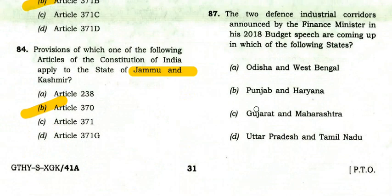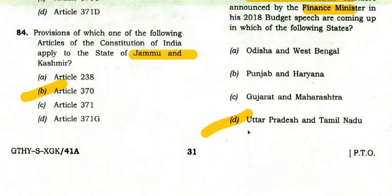The two defense industrial corridors announced by the Finance Minister in the 2018 budget speech are coming up in which states? The right option is Uttar Pradesh and Tamil Nadu.